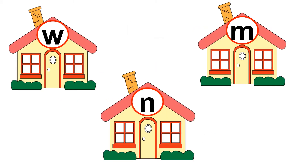Children, look — there are three houses and each house has got a letter written on it. Let's say the name of each letter. This is W and what sound does the letter W make? W says W. This is letter N and N says N. Can you identify this letter? The one which has got three sticks? Very good! This is letter M and the sound that letter M makes is M.